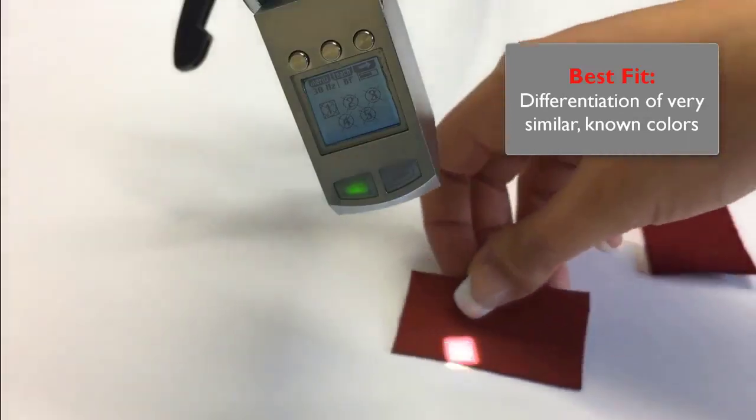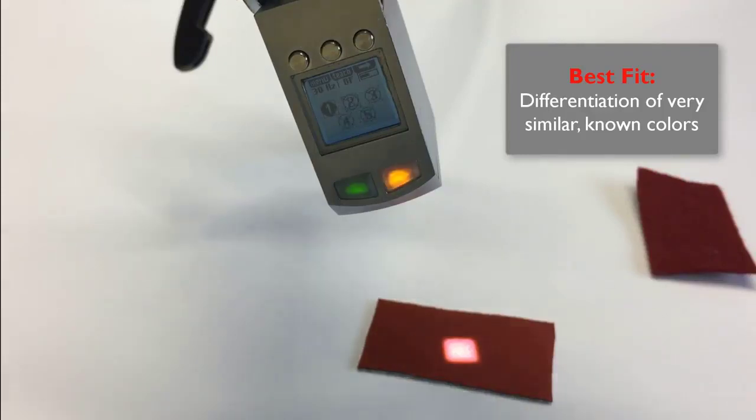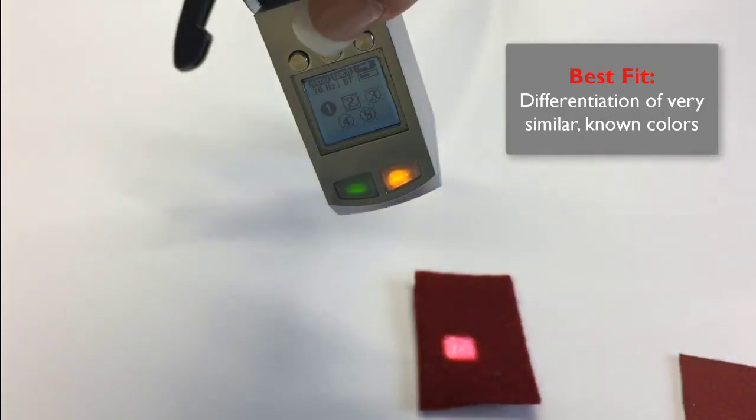Next we'll teach red felt and red leather in best fit mode. First the felt. We'll quick teach by pressing and holding the teach button. There we've taught one. Next we've selected two. You can see the square around the number two.